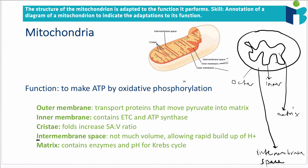The inner membrane is folded into structures called cristae, and the reason these folds are adapted to the function is because they increase the surface area to volume ratio. This means you can fit a lot more electron transport chains and ATP synthase — because if you have more surface area of membrane, you simply have more of these proteins.